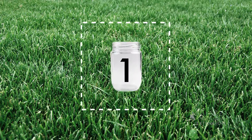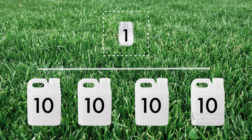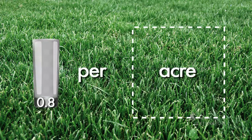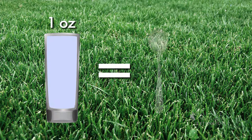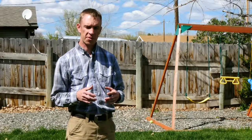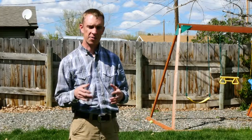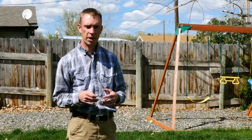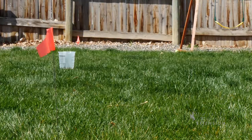So we take the one quart per acre and divide it by the 40 gallons, and that gives us about 0.8 ounces per acre. One ounce is equal to two tablespoons. Per the recommended rate of this particular pesticide at one quart per acre and a spray rate of 40 gallons per acre, we would need to apply two tablespoons per gallon of water.